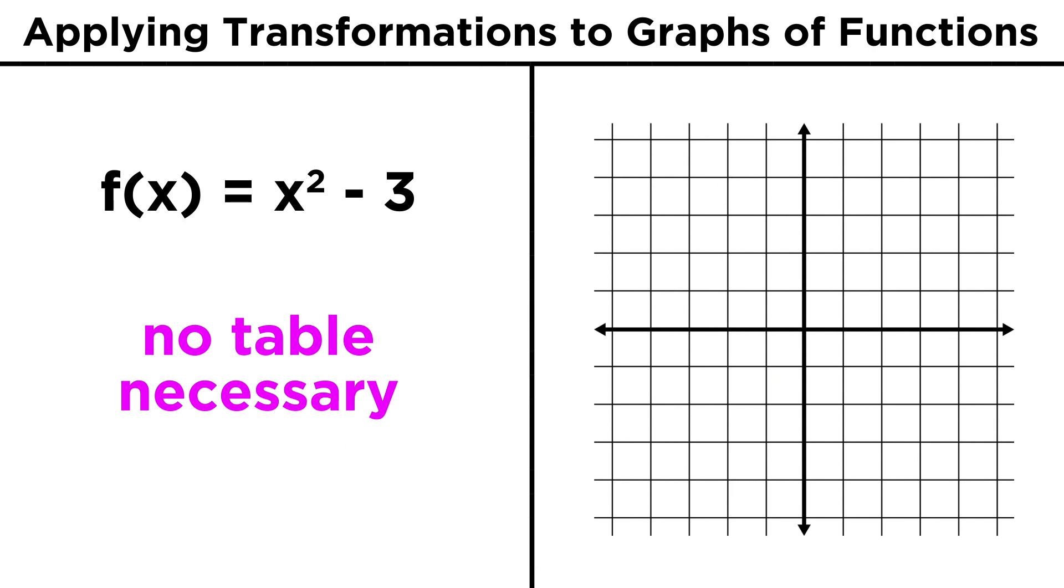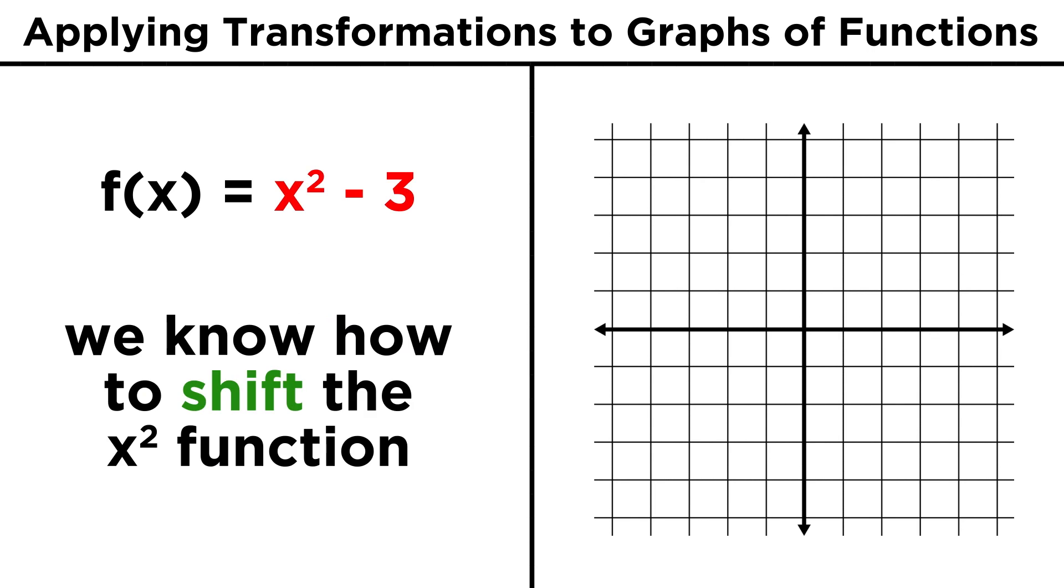Now that we know how this works, we don't have to make tables for this kind of transformation anymore. If we see x squared minus three, we know what to do. We just take the x squared graph, and we simply shift it downwards by three.